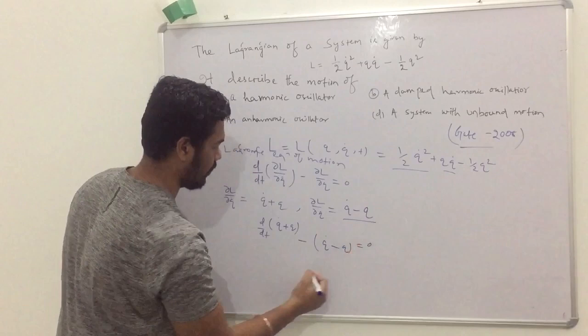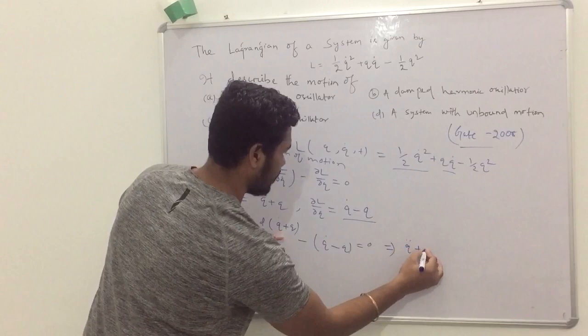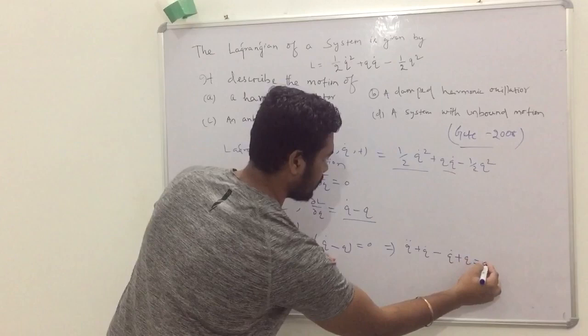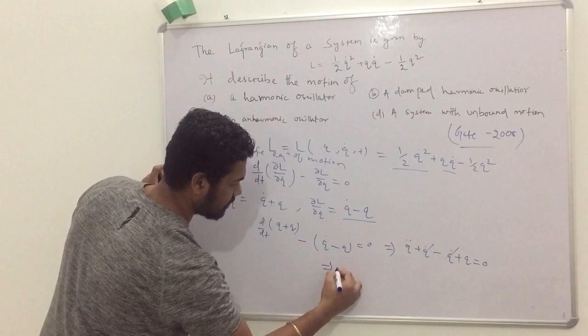Which equals Q double dot plus Q dot minus Q dot plus Q equals zero. The Q dot terms cancel. The remaining term is Q double dot plus Q equals zero.